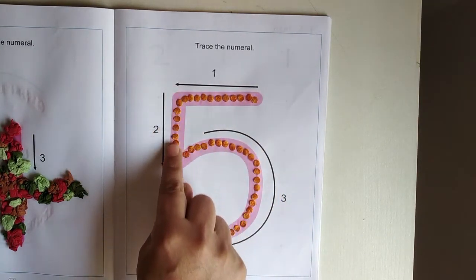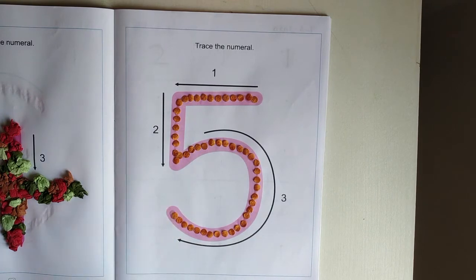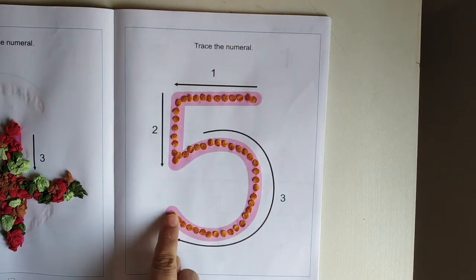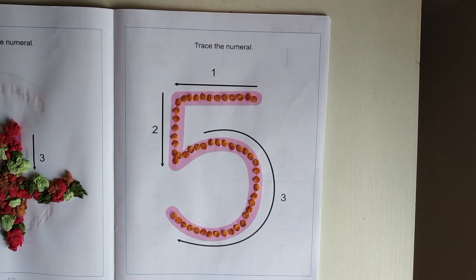Sleeping line, standing line, reverse C. 5. Children, you are going to do this practice. You are going to do this as practice.